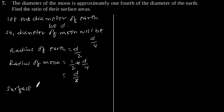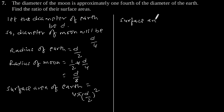So surface area of earth is equal to 4π(d/2)², and surface area of moon is equal to 4π(d/8)². So our required ratio will be...